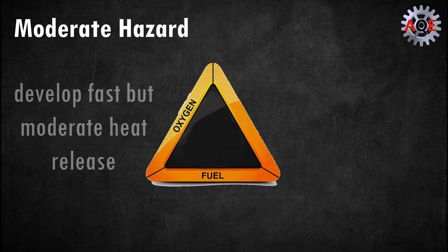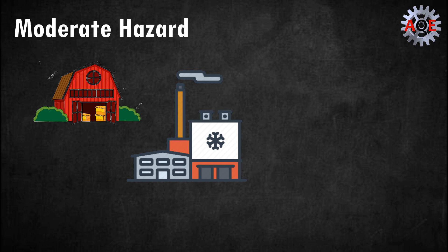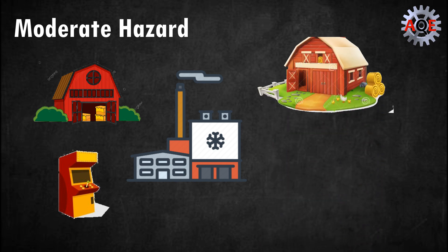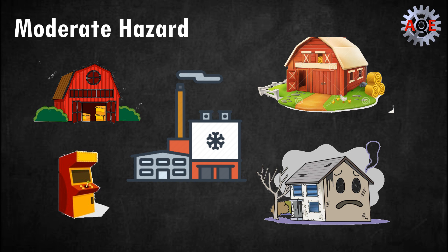Some examples of moderate hazard buildings include dairy barns, cold storage warehouses, manufacturing and clothing plants, amusement occupancies such as an arcade, farm equipment sheds, machine shops, some restaurant commercial kitchens, unoccupied buildings, and certain machine shops.